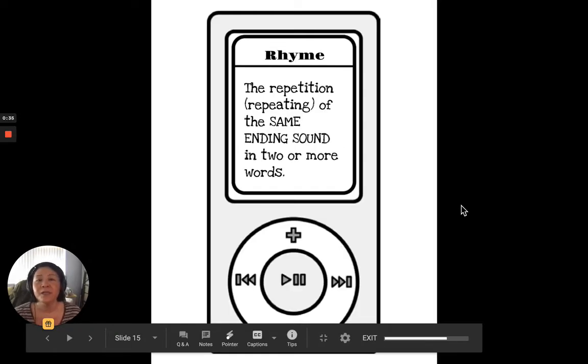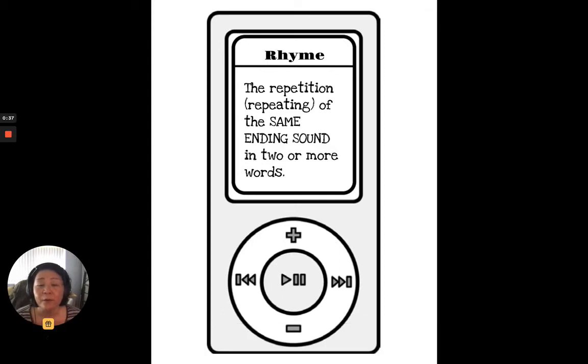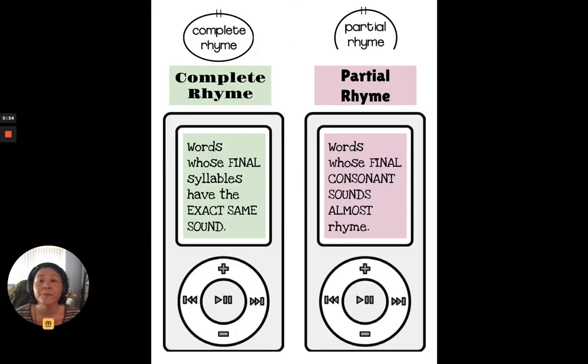So what rhyme is, is the repetition or repeating of the same ending sound in two or more words. So again, rhyme is the repetition or repeating of the same ending sound in two or more words. So there are two types of rhymes when we're talking about for our study. We have a complete rhyme and a partial rhyme.